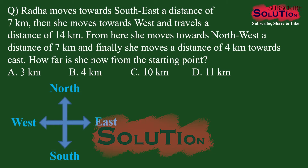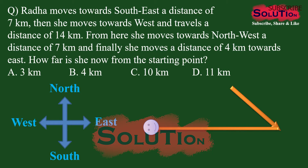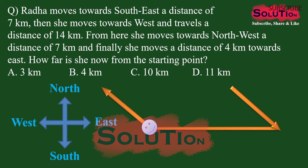Next direction sense test: a person named Radha is moving towards southwest — that is, in between south and west — for seven kilometers. Then she moves towards west for 14 kilometers. From there she moves towards northwest, which is the direction between west and north, for 14 kilometers.